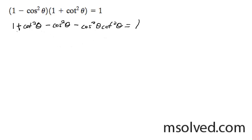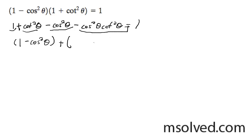What we're going to do is split these up. I'm going to put the 1 minus cosine squared theta together. And I'm going to group this cotangent squared theta with this other term here, so I get cotangent squared theta minus cosine squared theta times cotangent squared theta equals 1.